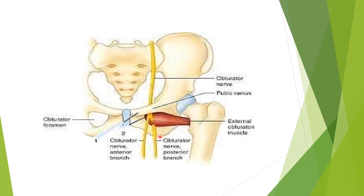The posterior branch passes between the adductor brevis and adductor magnus, supplying half of adductor brevis and also the adductor magnus, and ends by giving a branch to the knee joint capsule (articular branch). This is illustrated showing the obturator nerve with its anterior and posterior branches, and the obturator externus muscle.